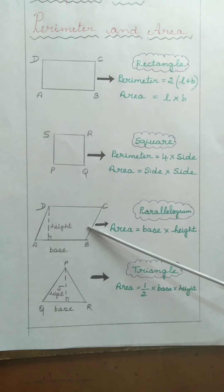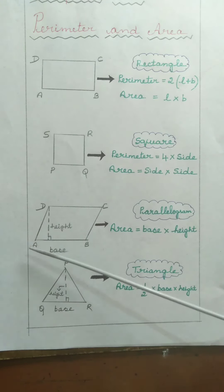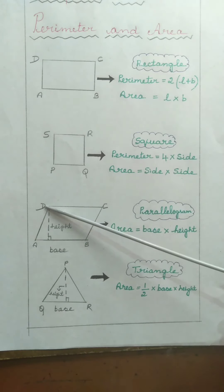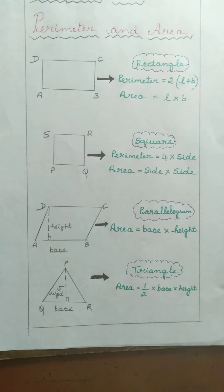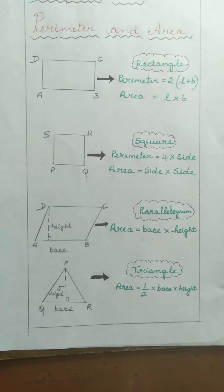The next figure is the parallelogram, which is a quadrilateral — a closed figure having 4 sides: AB, BC, CD and DA. In a parallelogram, opposite sides are equal: AB equals DC and BC equals AD. Regarding angles, opposite angles are equal in a parallelogram.